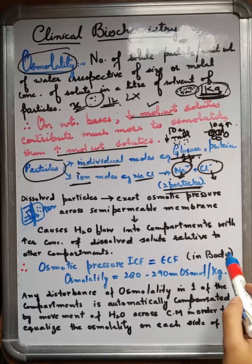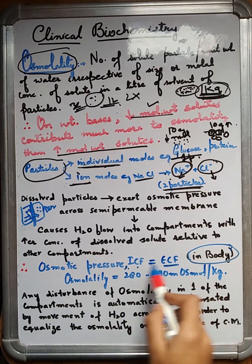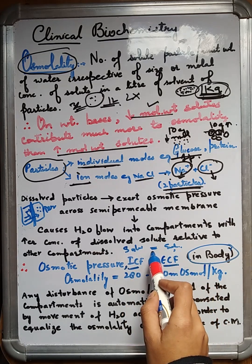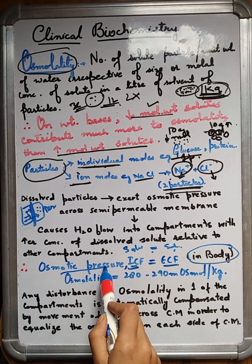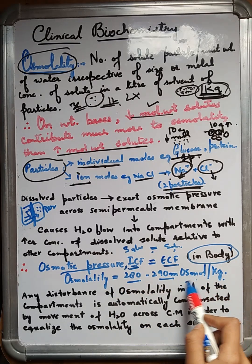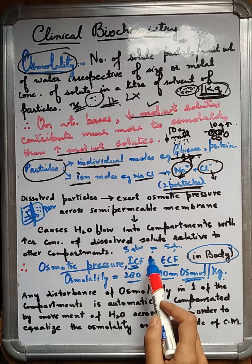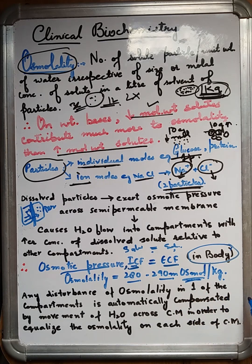Let's talk about what happens inside our body. The osmotic pressure is the same between ICF and ECF because the concentration of solute in ICF is equivalent to the concentration in ECF, and water concentration on both sides is equivalent. When ICF is equivalent to ECF in terms of osmotic pressure, the osmolality is equal to 280 to 290 milliosmoles per kg. If any disturbance occurs in this osmolality, water moves across the cell membrane to compensate and equalize the osmolality on each side.